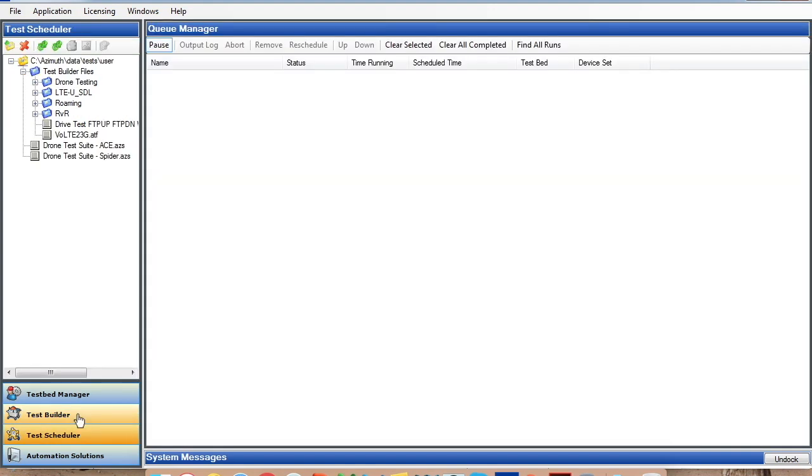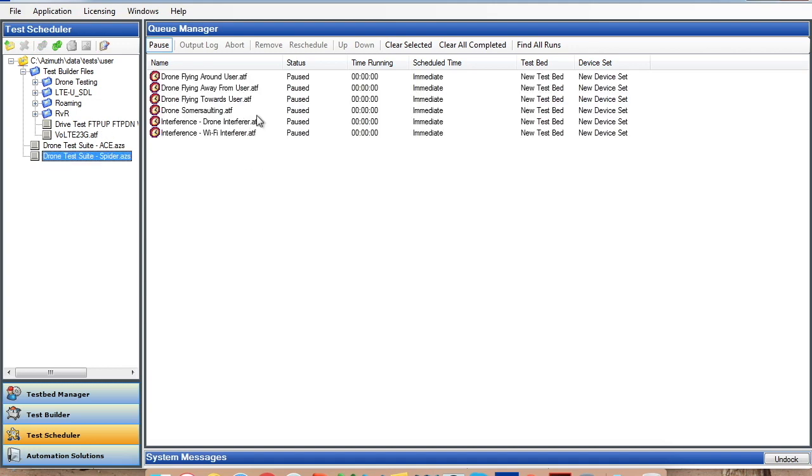Once I've created a test case in Test Builder, I can run the test case as is or run it from Test Scheduler. Test Scheduler allows you to schedule multiple tests for execution. Test Scheduler gives you a lot of flexibility. You can choose what tests you want to run, what sequence you want to run them in and when you want to run them. So for me to run a test case, I'm going to pause it first and then I can drag and drop the test cases. So in this case, I have a test suite. I'm going to drag and drop the test suite.